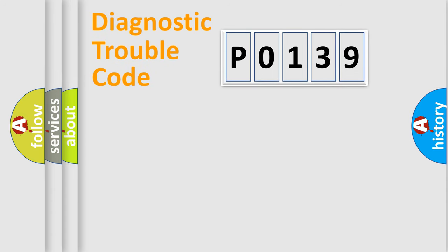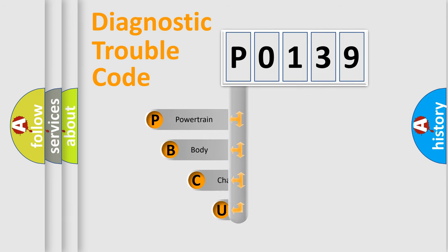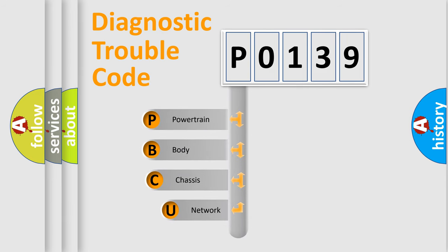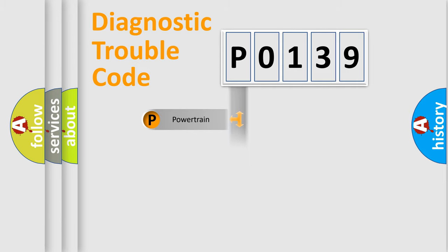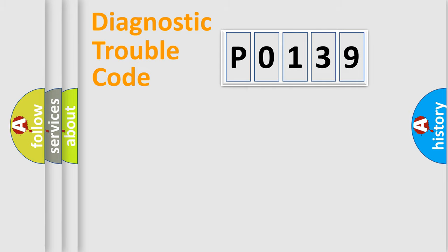Let's do this. First, let's look at the history of diagnostic fault code composition according to the OBD2 protocol, which is unified for all automakers since 2000. We divide the electric system of the automobile into four basic units: Powertrain, Body, Chassis, and Network.